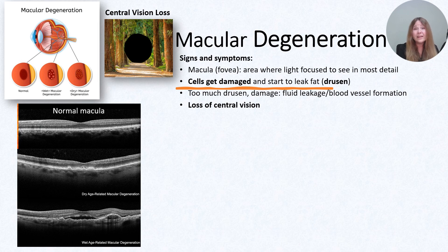People lose central vision. They can no longer read clearly. They can't drive. They can't see people's faces. Glasses don't help. This can be really devastating, and once those cells are scarred, they typically don't get better.